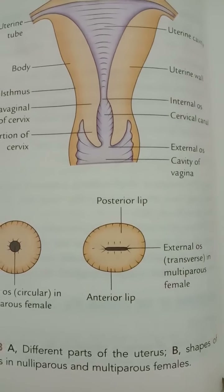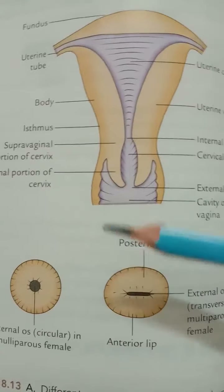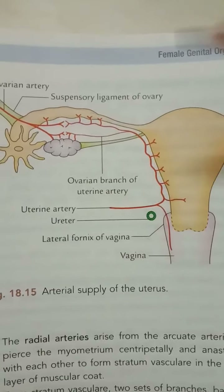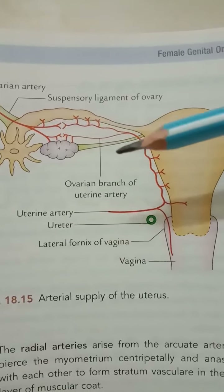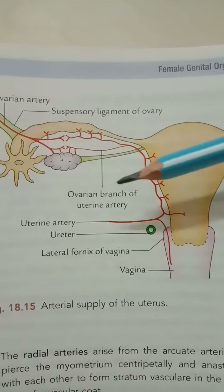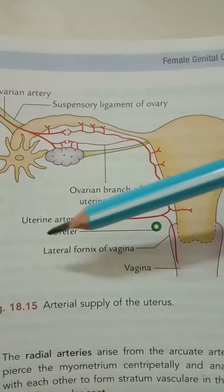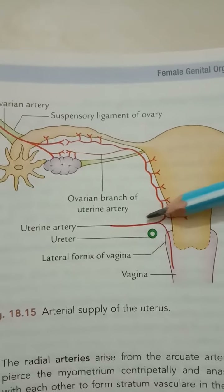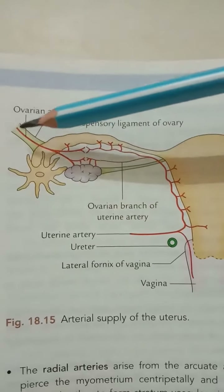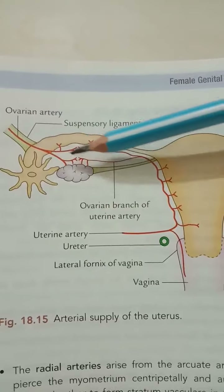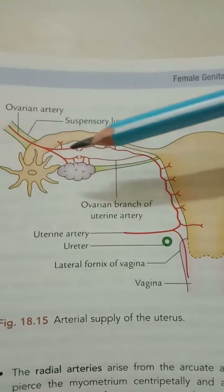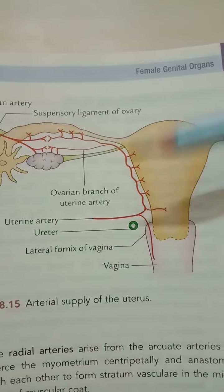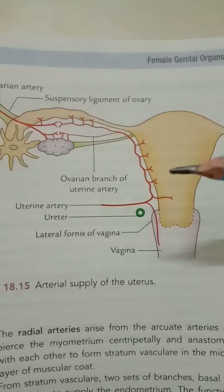The arterial supply of the uterus is mainly from the two uterine arteries and partly from the two ovarian arteries. The uterine artery is a branch of the internal iliac artery, and the ovarian artery is a direct branch from the abdominal aorta. Both arteries anastomose to give the blood supply to the uterus.